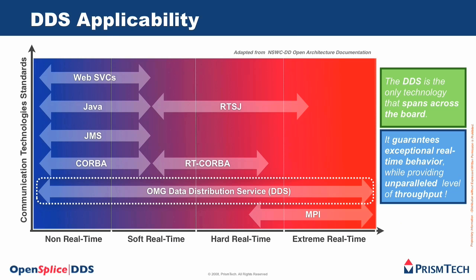Yet another validation of DDS applicability came from a study by Dahlgren's laboratory of the NSWC. The study compared web services Java, real-time Java, JMS, CORBA, real-time CORBA, the OMG Data Distribution Service, and MPI with respect to their ability to satisfy requirements of non-real-time, soft-real-time, hard-real-time, and extreme-real-time applications. The OMG Data Distribution Service was the only technology able to satisfy the requirements for all of these application categories.